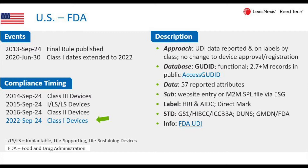As to the timing, the FDA started off with the high-risk devices first, requiring implementation on both the label and for the reporting of the GUDID data to the GUDID database. So Class 3s, implantables, life-supporting, life-sustaining, and Class 2s are all passed.